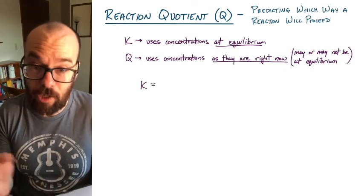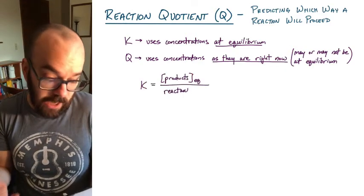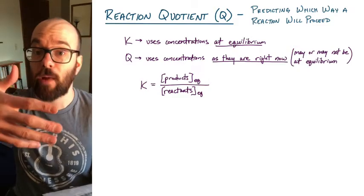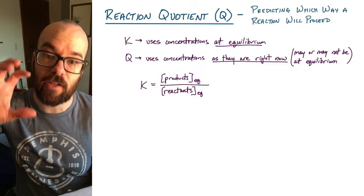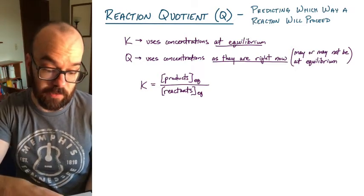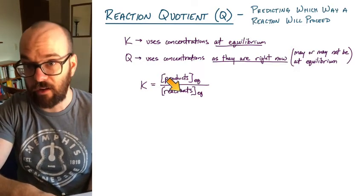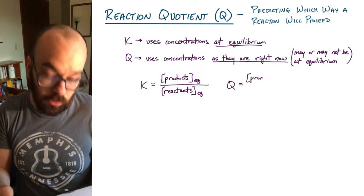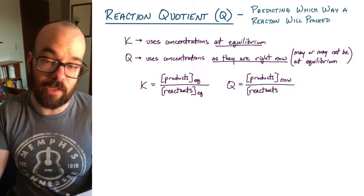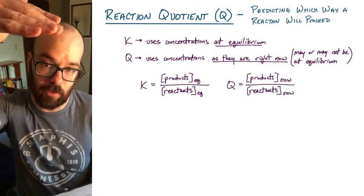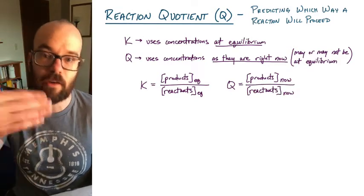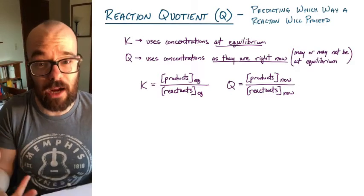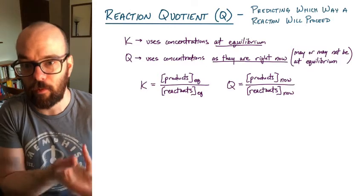You calculate Q and K pretty much the same way. For K, we look at the products raised to their stoichiometric powers over the reactants raised to their powers, but only using values at equilibrium. For Q, we calculate exactly the same way — products raised to their coefficients divided by reactants raised to their powers — but using the concentrations as they are now, before the reaction has reached equilibrium.